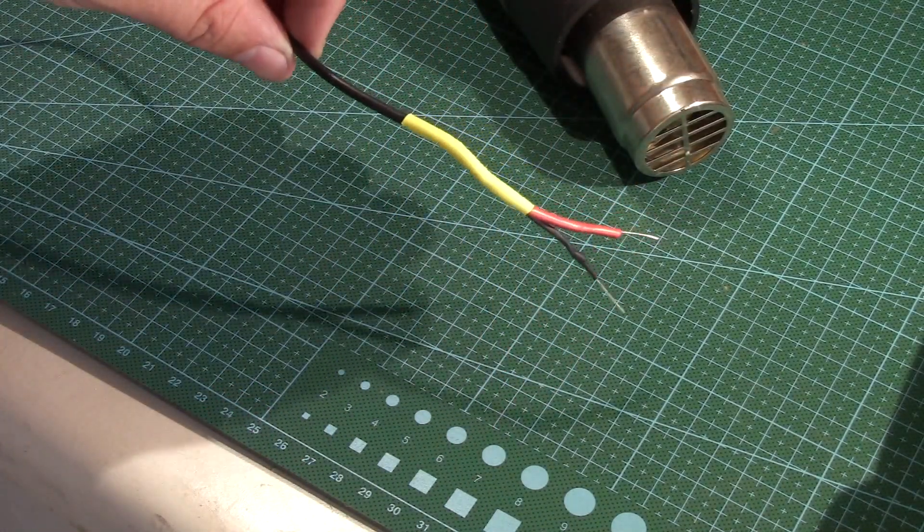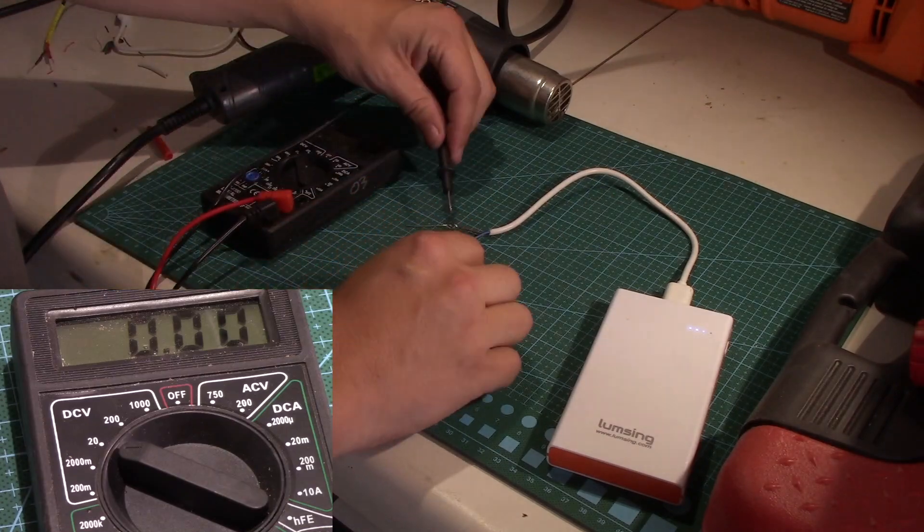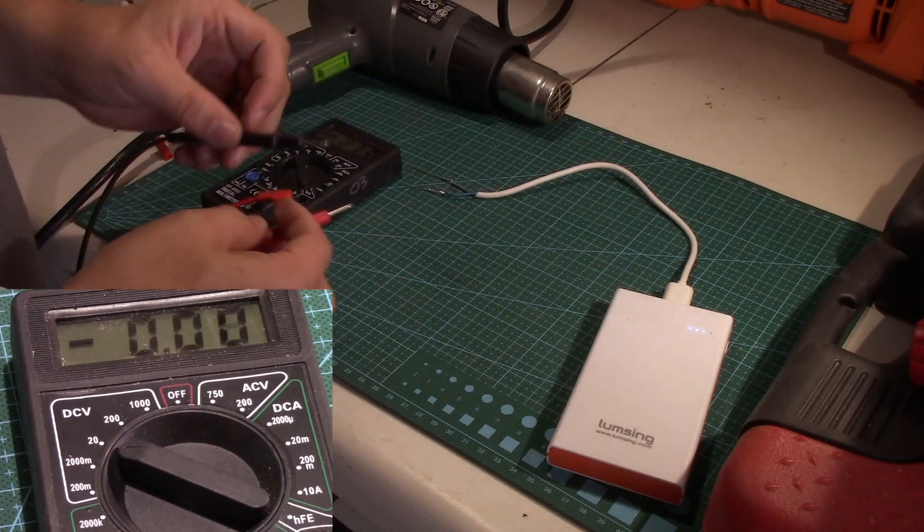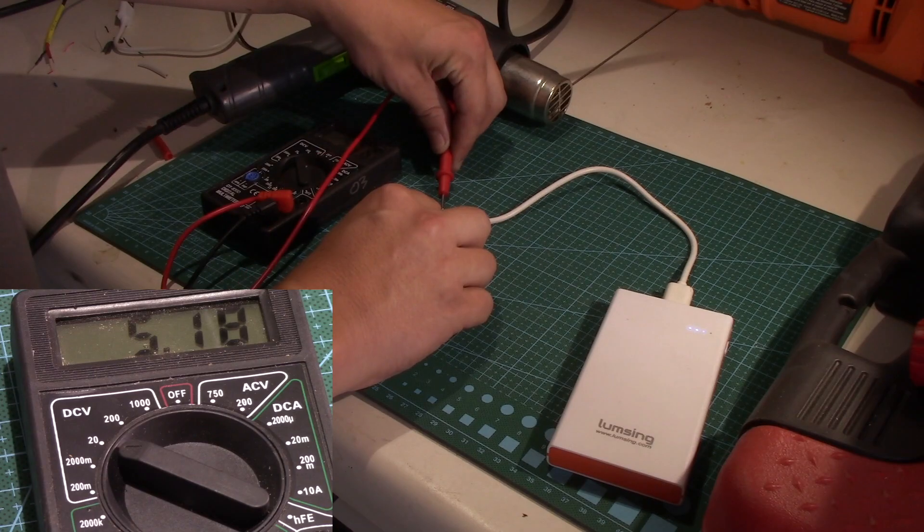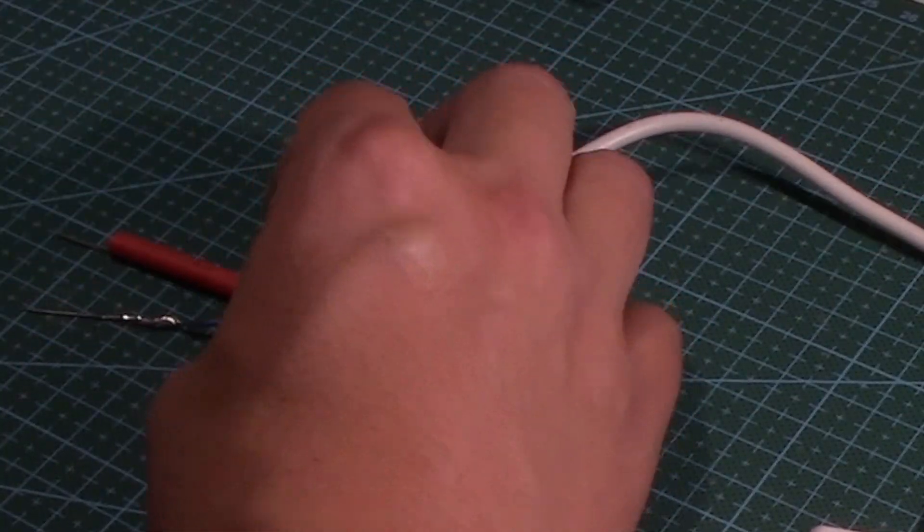Some USB cables that are just for power have some weird color, so you have to use a multimeter to determine the positive side. You can see when positive is hooked to positive it shows up as a positive voltage. If it's connected backwards the voltage is negative.